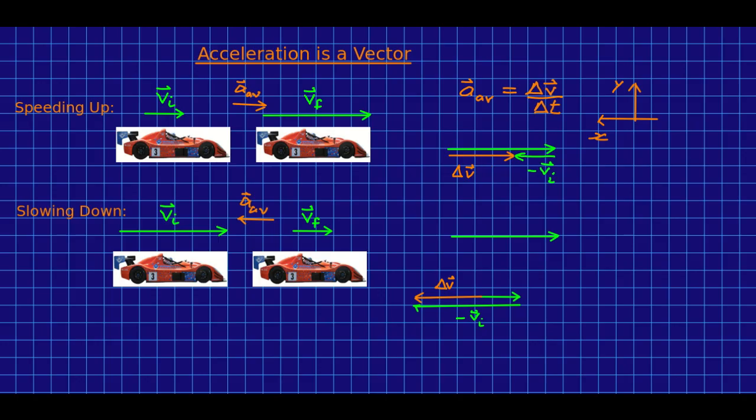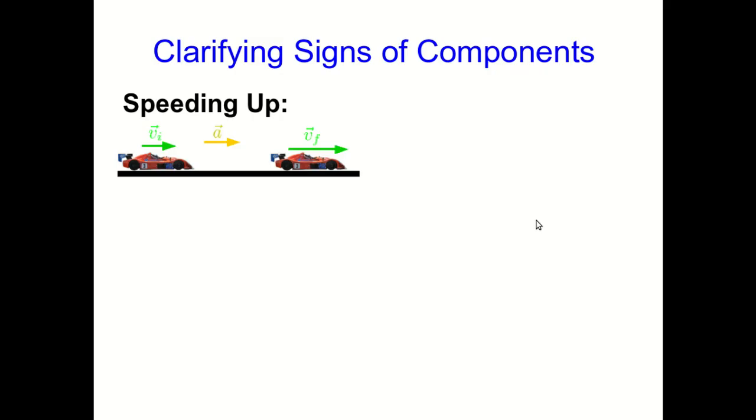Because if instead I define my x-axis pointing the opposite way, now the x component of this acceleration is negative, even though this is speeding up, and the x component here is positive, even though this is slowing down. So many students have a misconception about a positive acceleration meaning speeding up and a negative meaning slowing down that I think I'd better clarify this further.